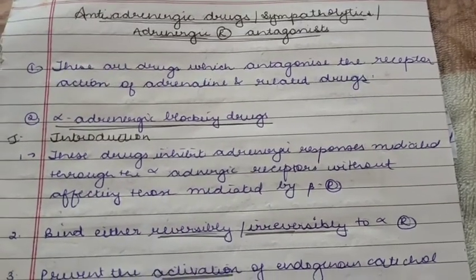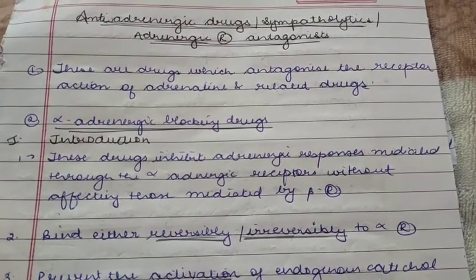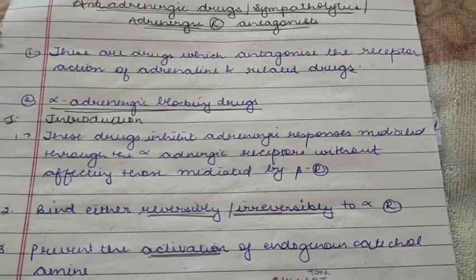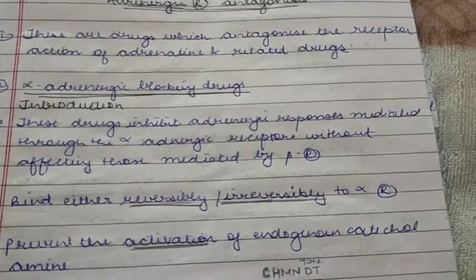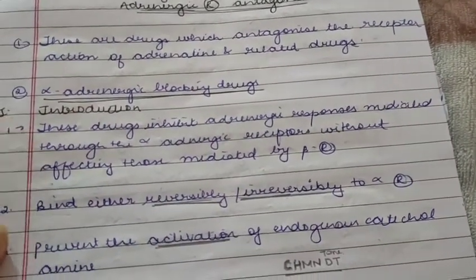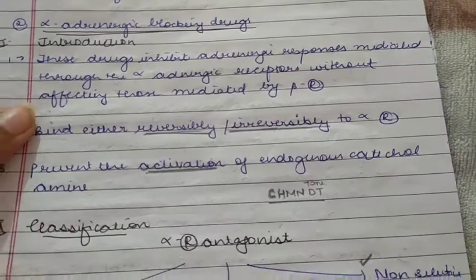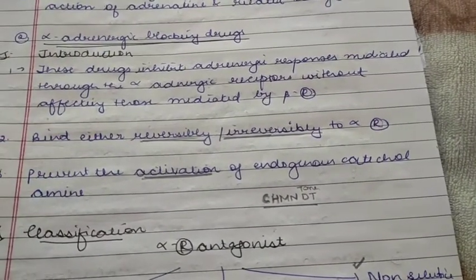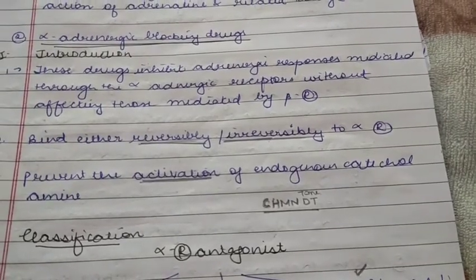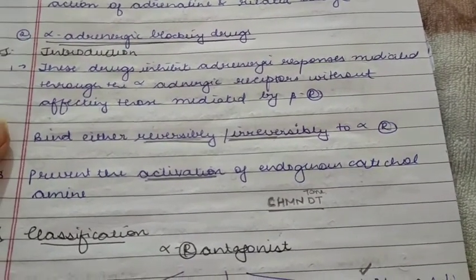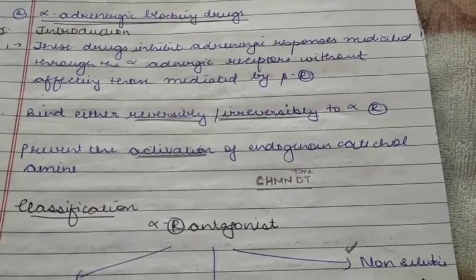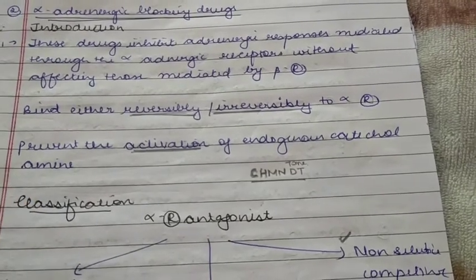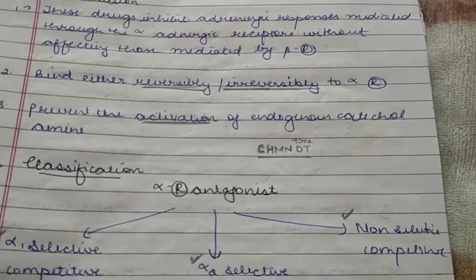Today we will do anti-adrenergic drugs, sympatholytics and adrenergic receptor antagonists. These are the drugs which antagonize the receptor action of adrenaline and related drugs. Alpha-adrenergic blocking drugs — for the introduction, these are the drugs which inhibit the adrenergic response mediated by alpha-adrenergic receptors without affecting those mediated by beta-adrenergic receptors. They bind either reversibly or irreversibly to the alpha-receptors, preventing the activation of exogenous catecholamines.